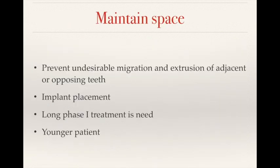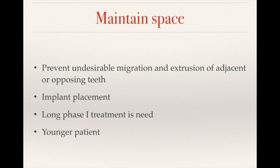We can also use the interim removable partial dentures to maintain space. Because adjacent or opposing teeth might have some migration or extrusion, which will eventually change the ideal occlusal plane. So we want something to stop tooth movement. Also, when we are doing implant placement, we have to wait four to six months for osseointegration. During that period, you don't want adjacent teeth moving. So you can also use the interim removable partial dentures to maintain the space.